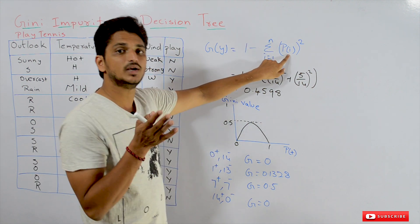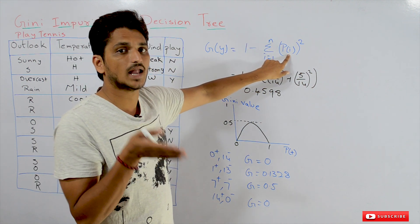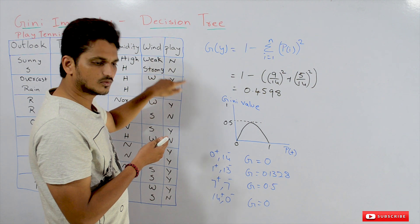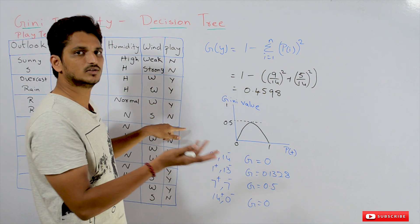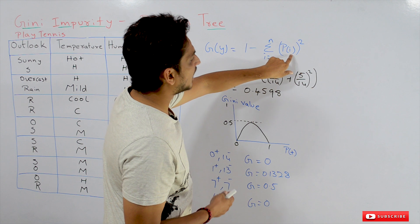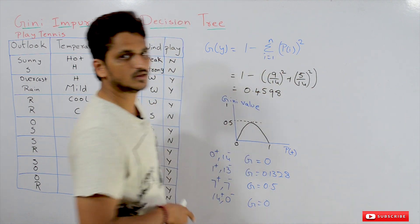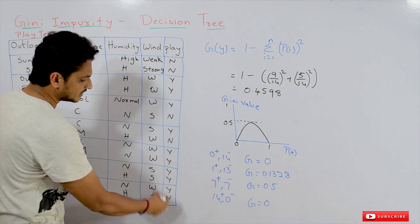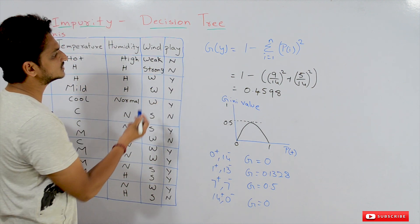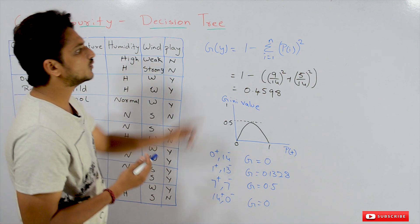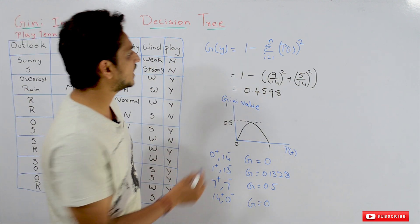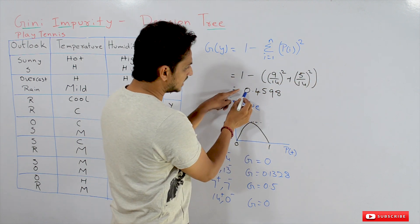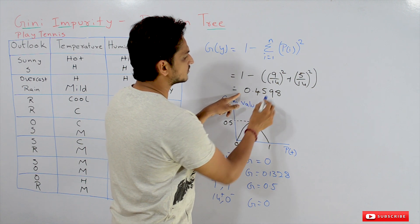p(i) means the probability of the ith class. Here we are having 2 classes — the negative class and the positive class. So we calculate probability of each class squared. In our dataset, out of 14 data points, 9 are positive and 5 are negative. We calculate: G = 1 minus (9/14)² plus (5/14)². If you calculate this value, we get 0.4598. This is how we calculate Gini impurity.